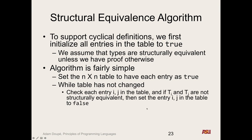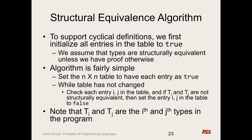The pseudocode: first set the n-by-n table with each entry as true. Then, while the table has not changed, check each entry i and j in the table. If Ti and Tj are not structurally equivalent based on the rules, set the entry in the table to false. Ti and Tj are the i-th and j-th types in the program.